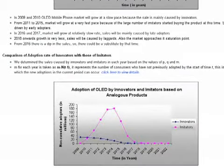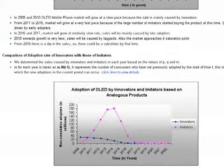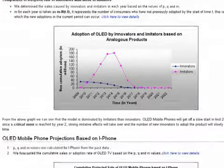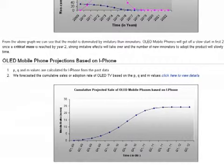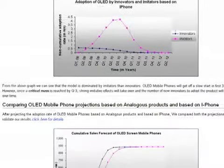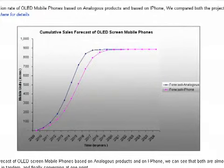This graph shows the trend of adoption by the innovators and the imitators of the OLED-based mobile phones, plotted with extrapolated data from the analogous products. From this graph, we can see that the model is dominated by imitators rather than innovators. OLED mobile phones will get off to a slow start in the first two years; however, once a critical mass is reached by the second year, strong imitative effects will take over and buyers will be imitators rather than innovators. To fortify our results, we further validated the extrapolated data from the LCD proxy by choosing yet another proxy analogous product, the iPhone. Both graphs have been placed adjacent to each other to confirm that our forecast for OLED-based mobile phones based on the analogous products was good.